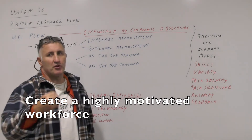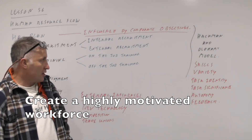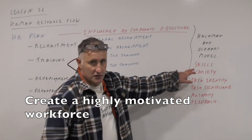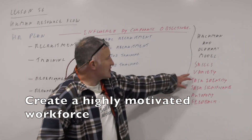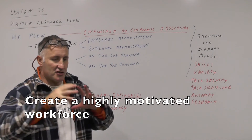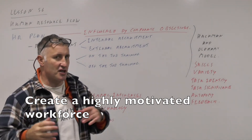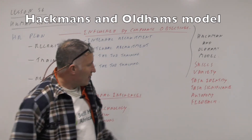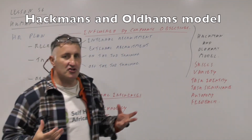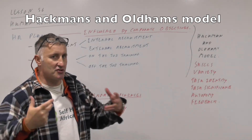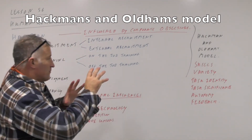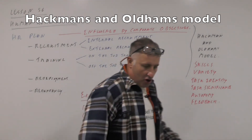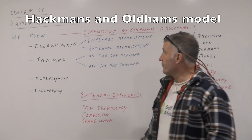This fits in with Hackman and Oldham's model, which we've already covered — that you've got to provide a lot of skills for the worker, lots of variety in terms of their job, task identity so they know what they produced, the significance of what they're doing for the outside world, autonomy so they can make their own decisions, and considered feedback. So these theories will influence your HR human resource flow.